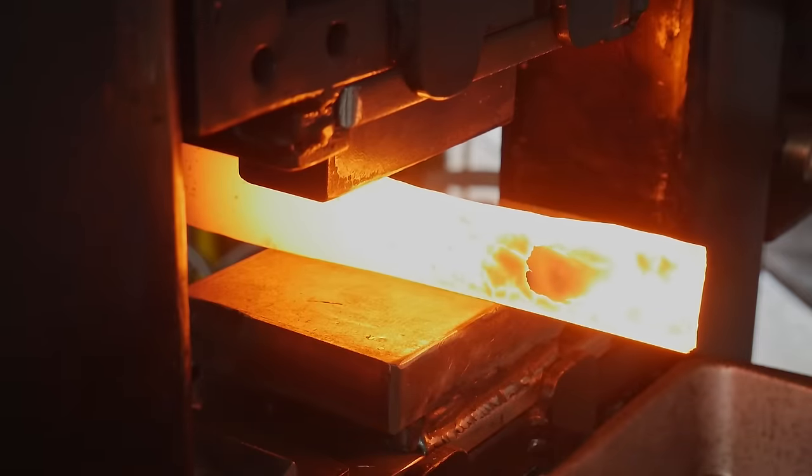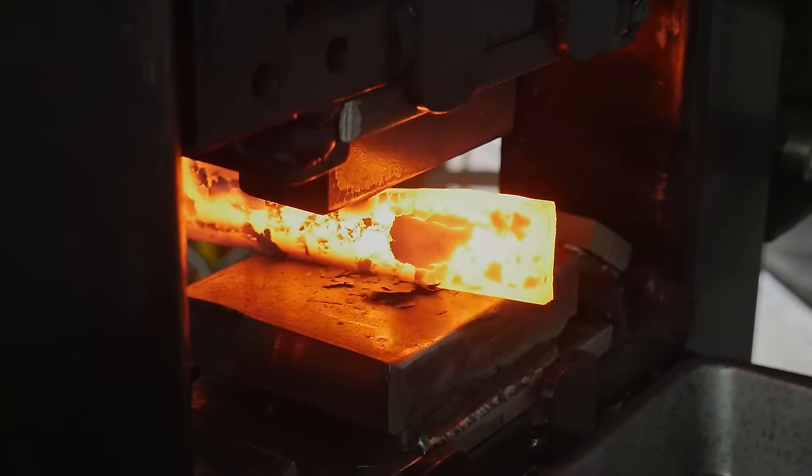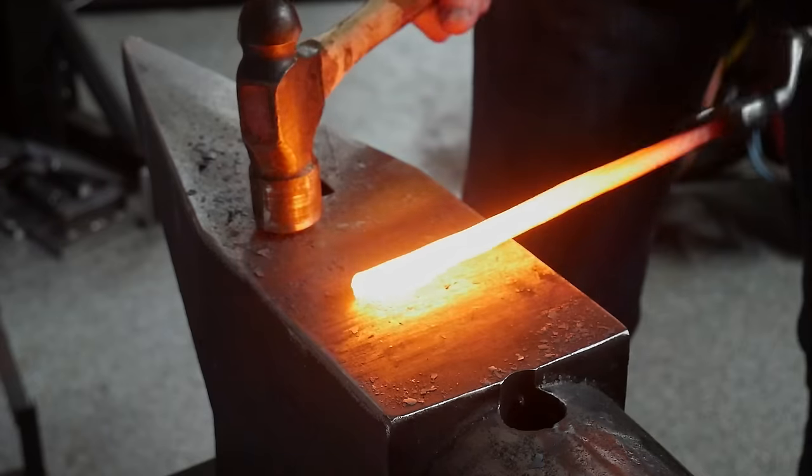As y'all just saw I flipped everything around to isolate the ricasso and took advantage of my hydraulic press to do this with a flat die on the bottom and a drawing die on top.